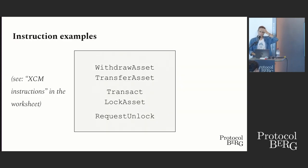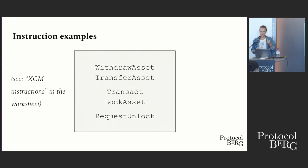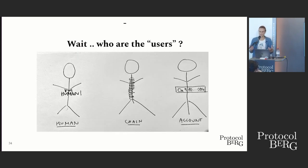In the XCM simulator examples linked in the worksheet, we're actually using a mock runtime of the Asset Hub. At this point we can use instructions to write cross-chain programs — and that's pretty powerful. A cross-chain program is just a set of instructions that can be executed across multiple chains. The end users of such a program can be accounts, contracts, or other chains — or people. We want to keep in mind this layer of programmability that's there to express a user's goal, no matter the user type.